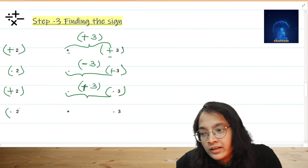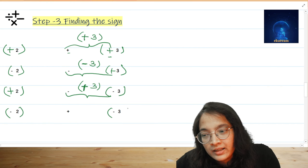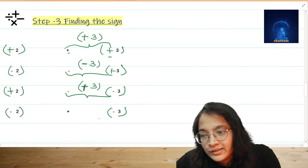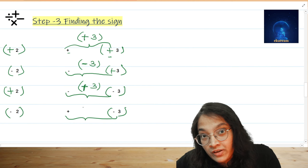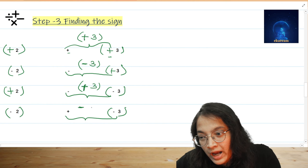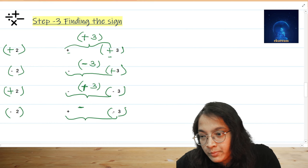In the last example, it is minus 2 plus minus 3. As you can check, this is plus and minus — two different signs. As we have already discussed, two different signs give minus. So we place minus and carry the number, giving minus 3.